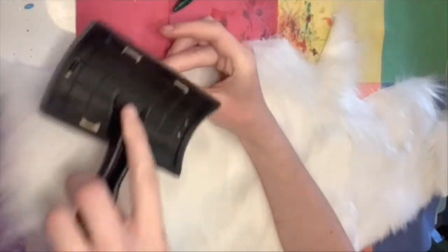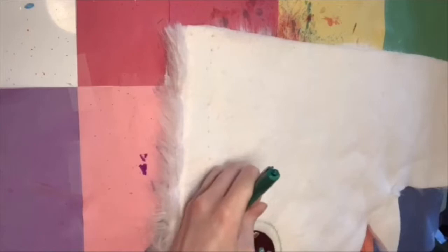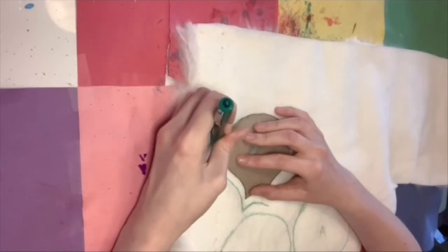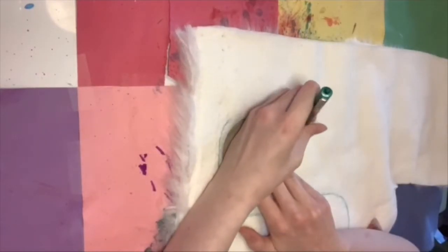After combing through all of the white fur, I started tracing around my template. I left at least a quarter inch of seam allowance around the template when drawing to make the future steps easier.